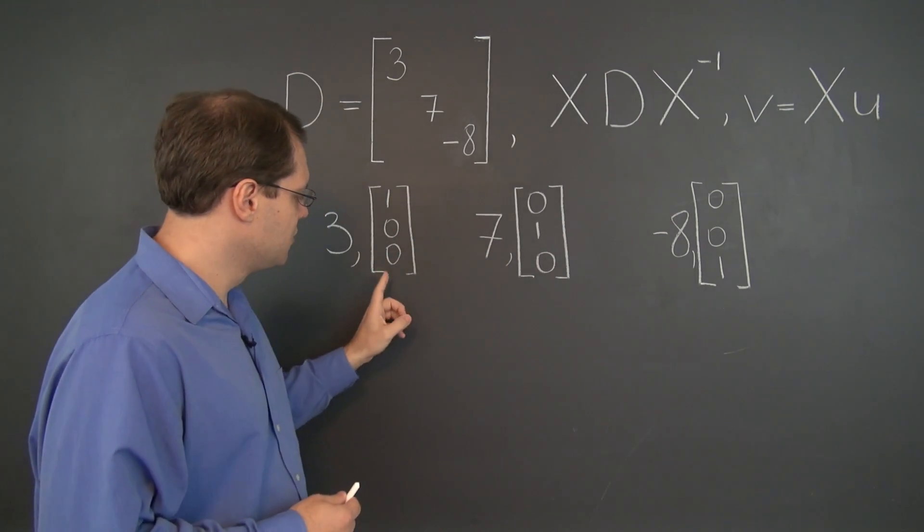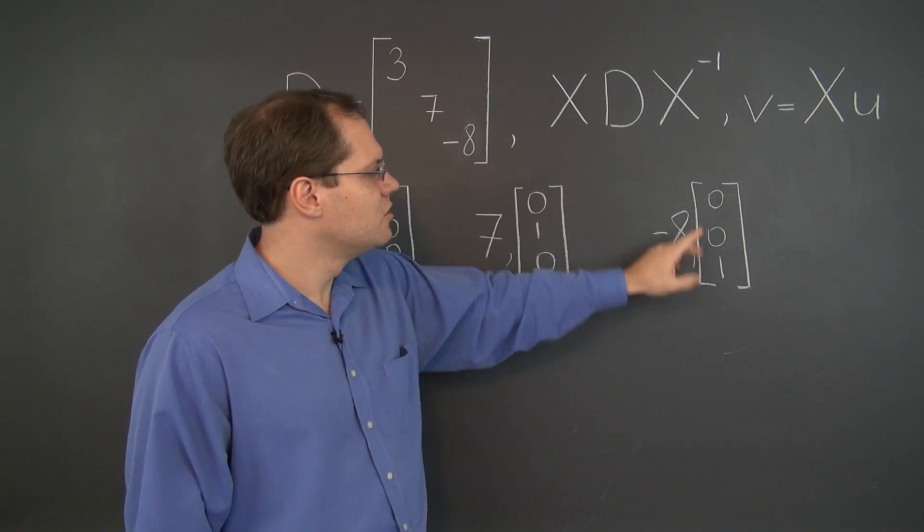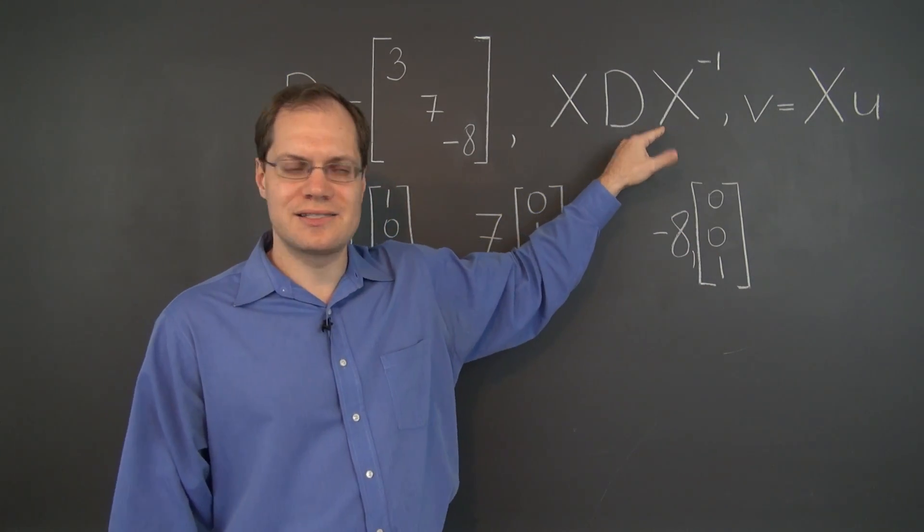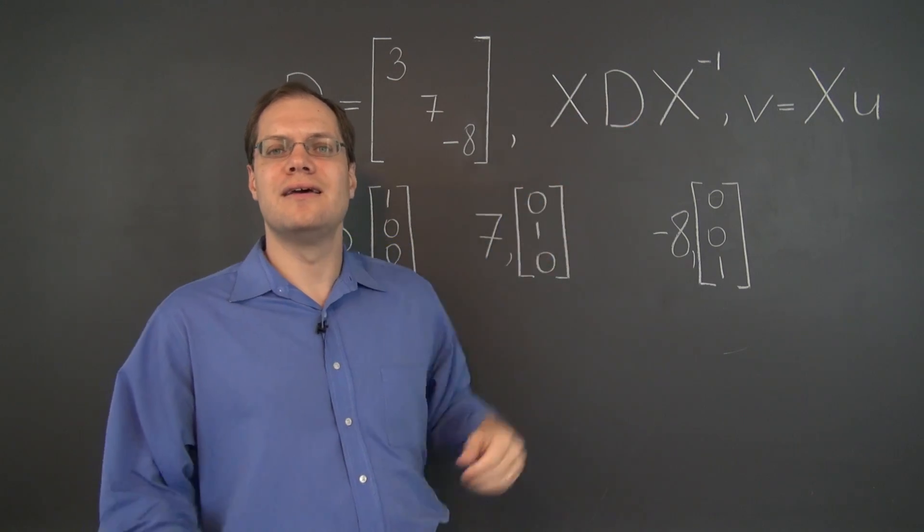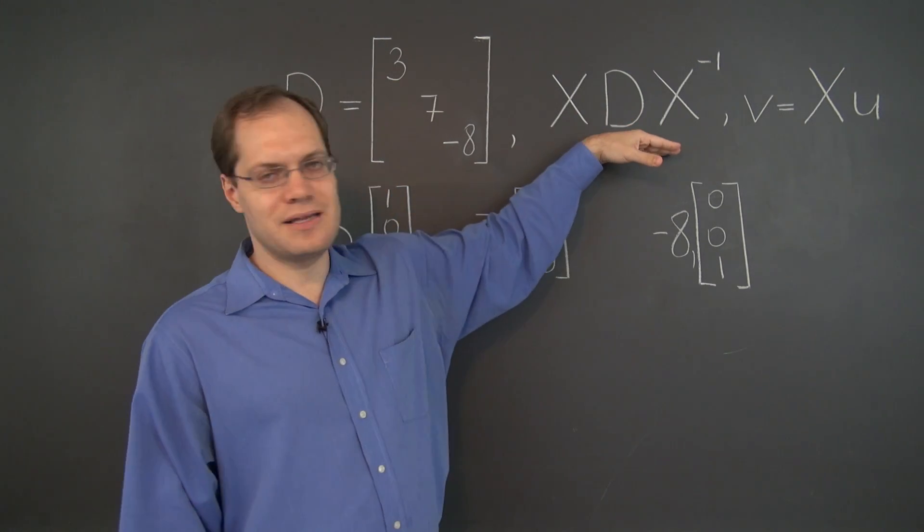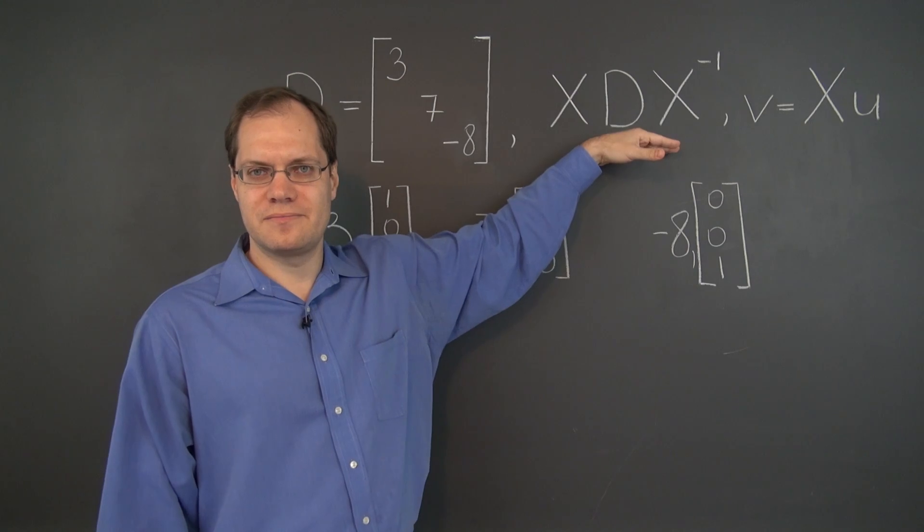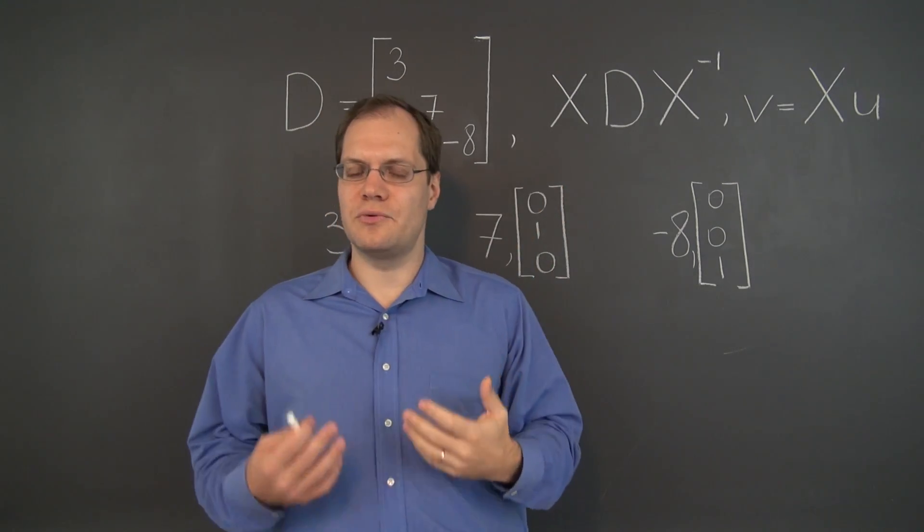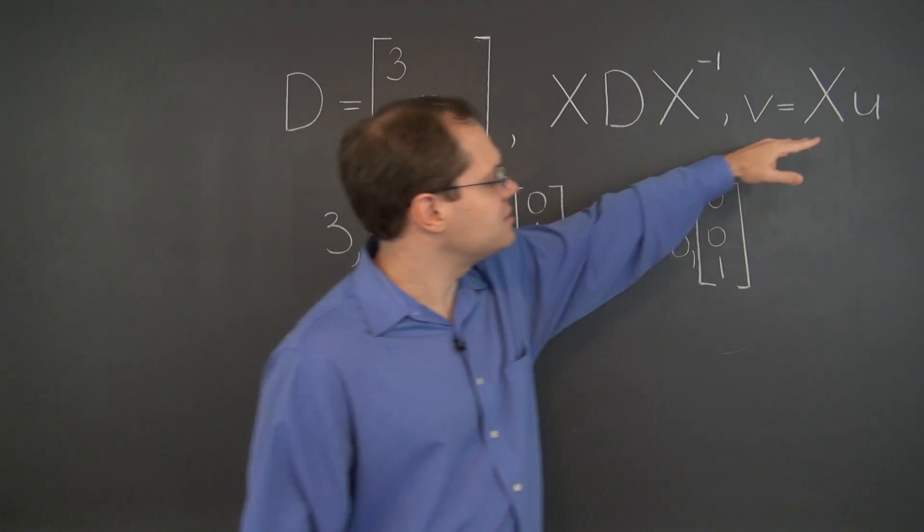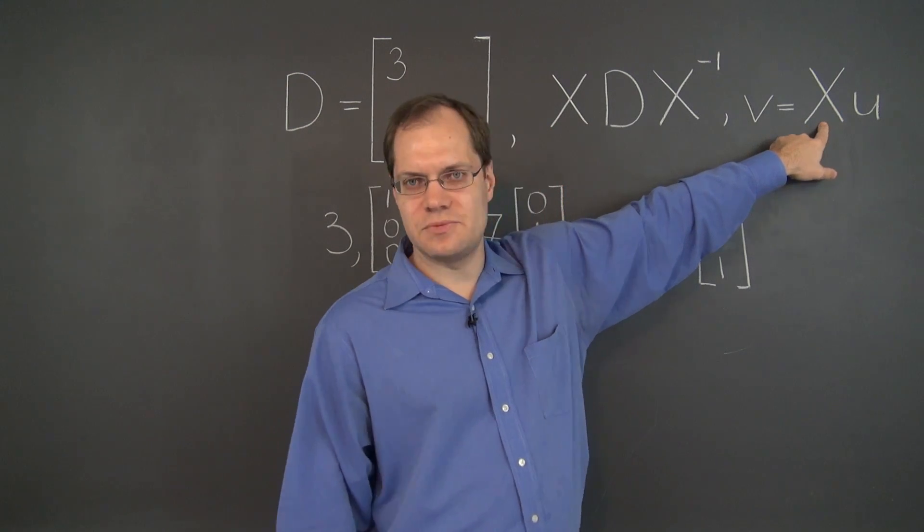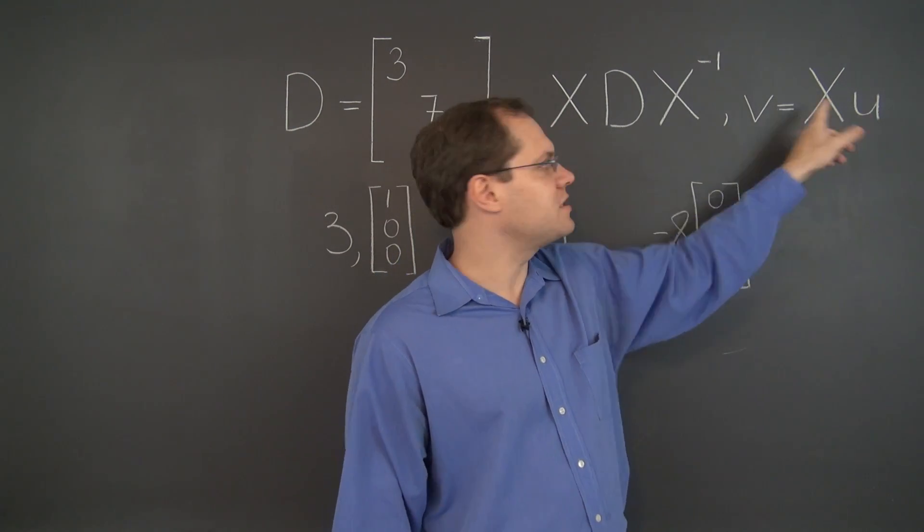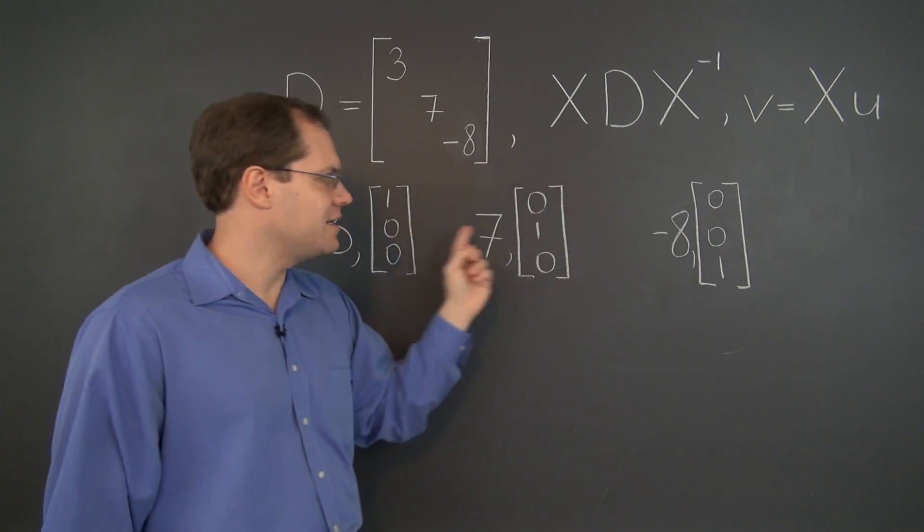Now D by itself would produce these eigenvectors, so we have to choose X properly, so that the eigenvectors that result by this similarity transformation are the eigenvectors that we want. So let's take a look here, what should that X be? Well, our U's, the eigenvectors of the matrix D, are right here.